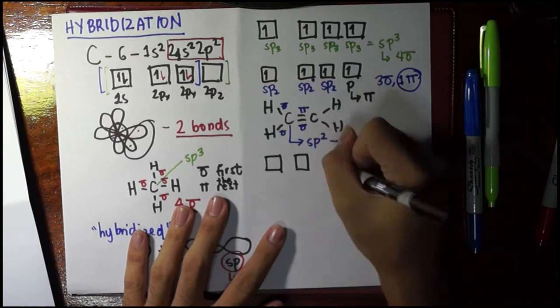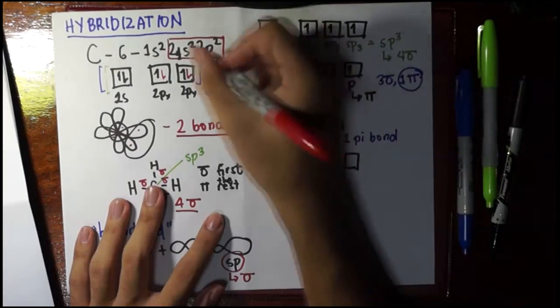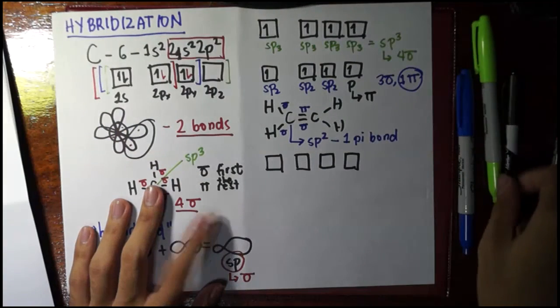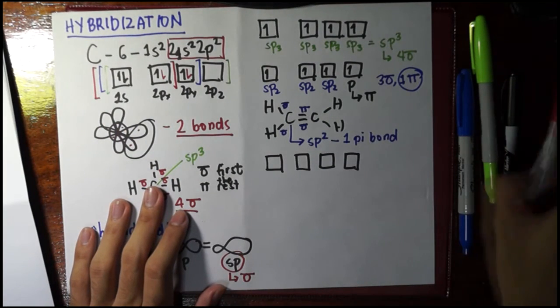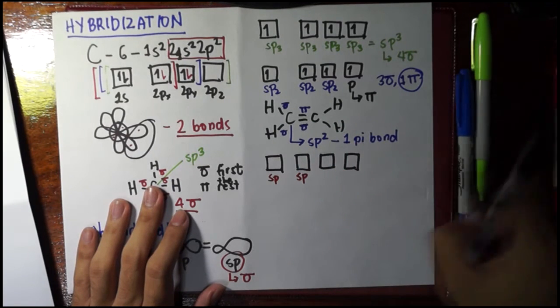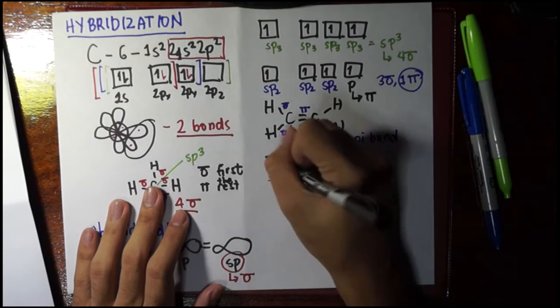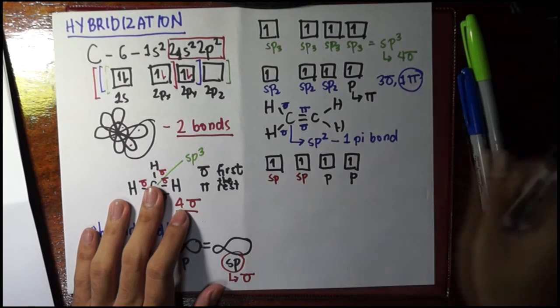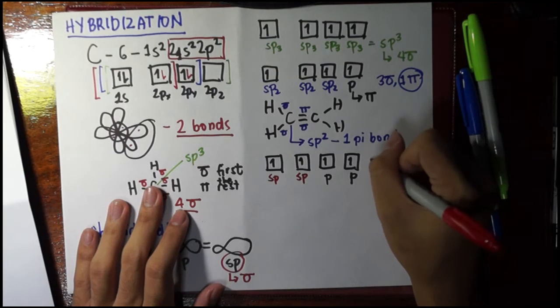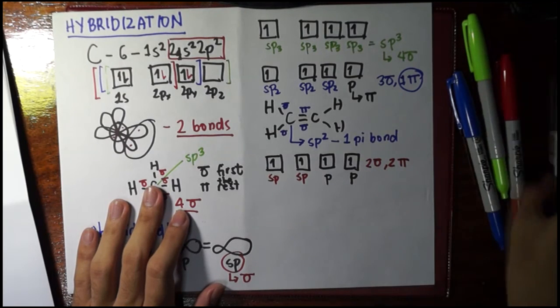Now, the final way of merging them together is, if you combine only these two, since it's just S and P, you would call them as SP. No need to put the SP¹, or the number 1. Then, we have two unhybridized orbitals. So, here we would be able to say that it could give you two sigma bonds and two pi bonds.